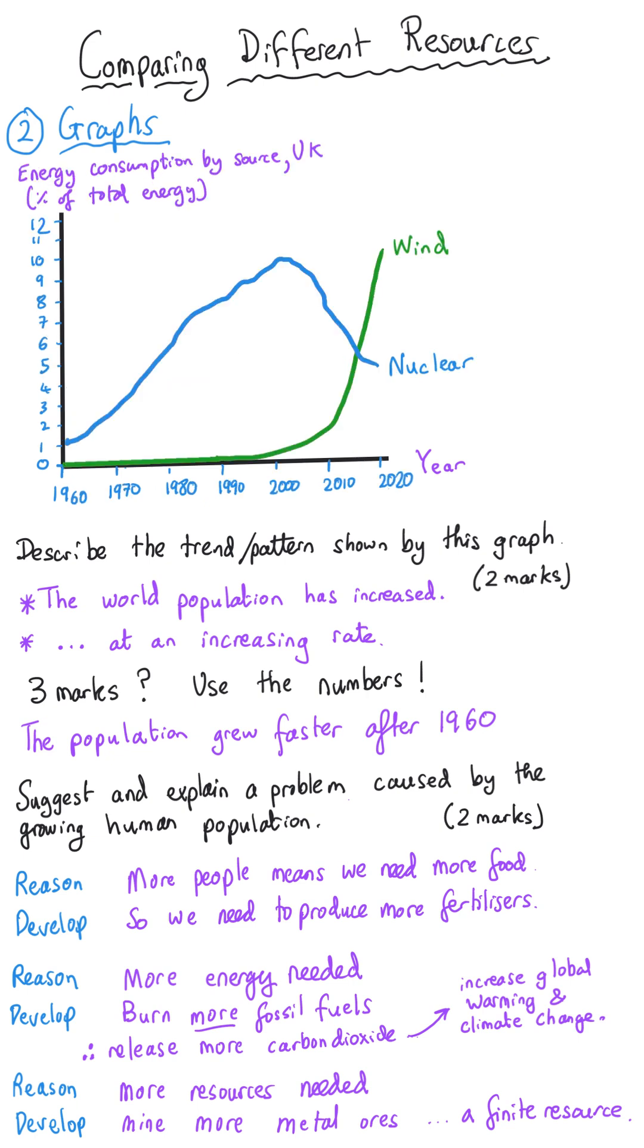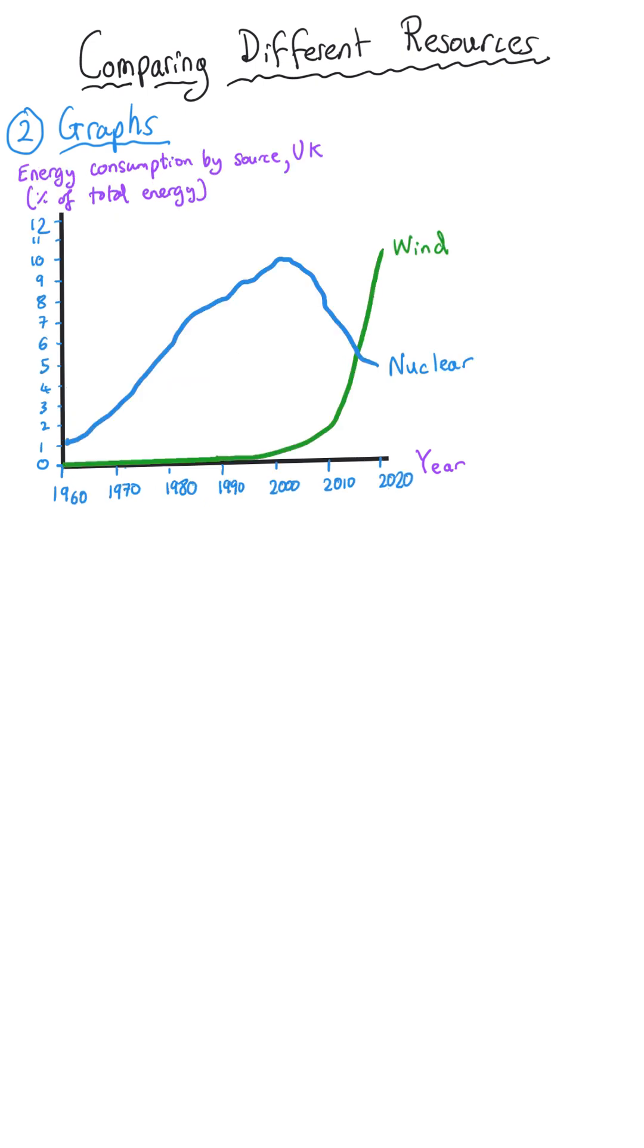Another type of graph that you could be asked to interpret might look at the use of energy resources over a particular time period. So in this graph I show a time period between 1960 to the year 2020 and we're looking at two energy resources.